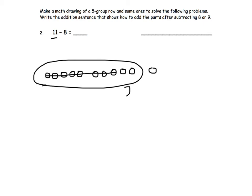That leaves 2 dots in the group of 10 and 1 dot on the outside. So 2 plus 1 equals 3. 11 minus 8 equals 3. The addition sentence that shows how to add the parts after subtracting the 8 is 2 plus 1 equals 3.